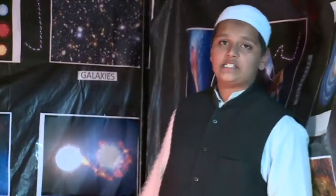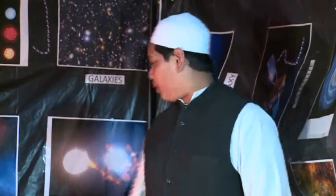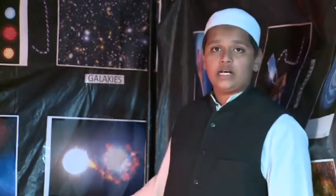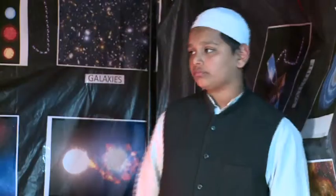In a binary star system, it sometimes happens that two stars revolve around each other. And one of these two stars sometimes starts eating the other star because of a stronger gravitational pull.